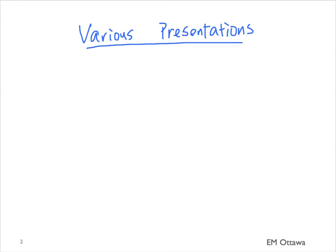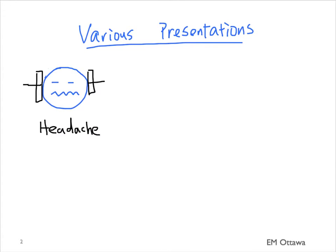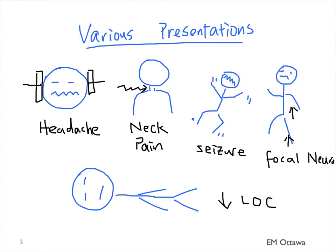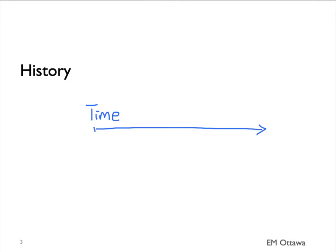Patients can have various presentations. They can have headaches, neck pain, seizures, focal neurological symptoms, or decreased level of consciousness. Depending on the presenting complaint, you will want to get the timeline of the events, what has happened when, and whether there are any other associated symptoms.